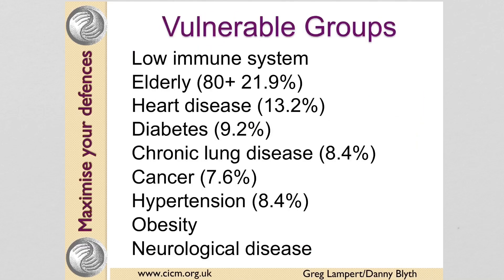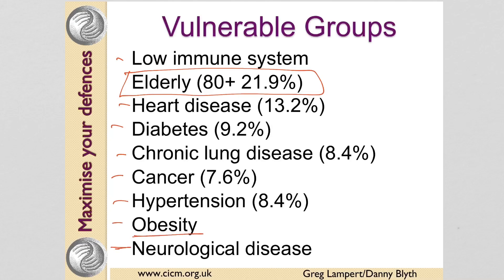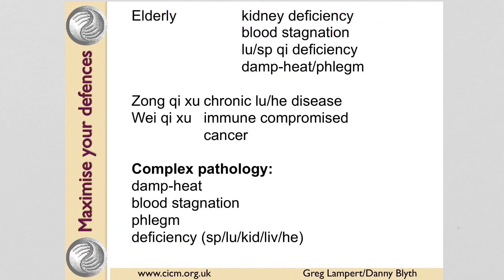Who is vulnerable? The main vulnerable group is the elderly, but also people with low immune function, heart disease, diabetes, chronic lung disease, cancer, hypertension, obesity, and neurological disease.